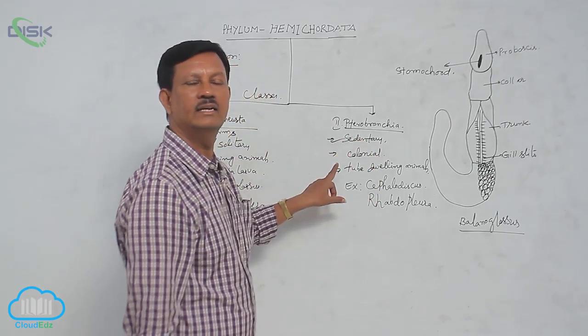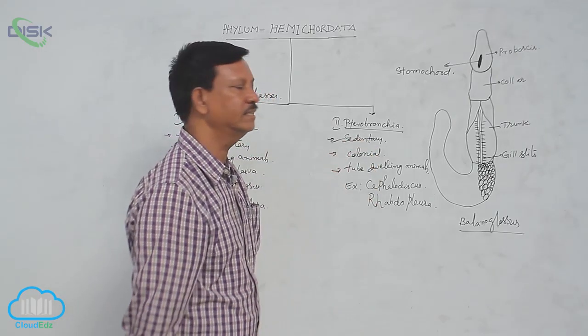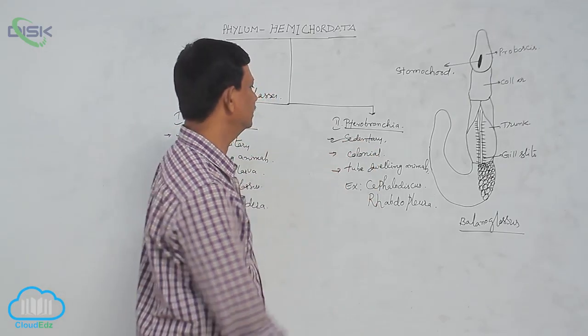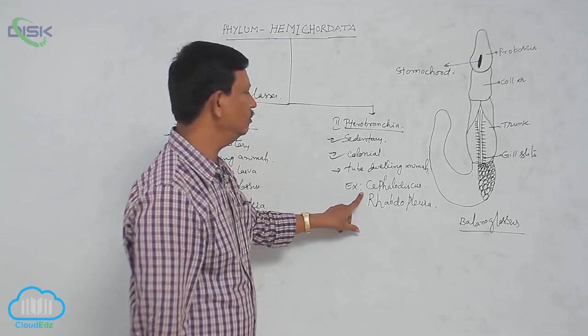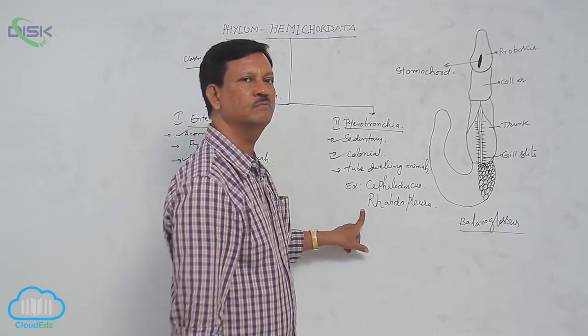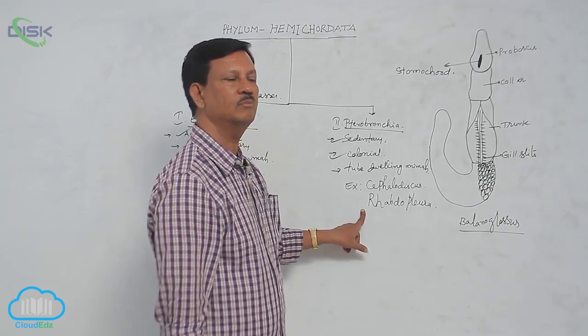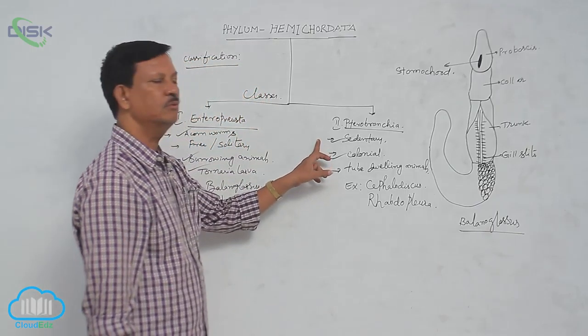They are not solitary. A group of animals are found together, so they are colonial forms and they are tube-dwelling animals. Examples include Cephalodiscus and Rhabdopleura. These are two examples that come under Pterobranchia.